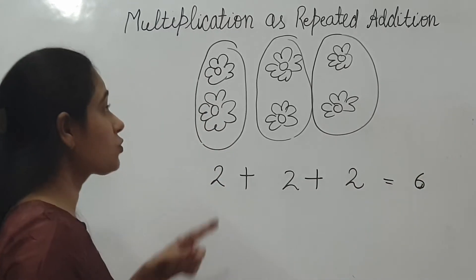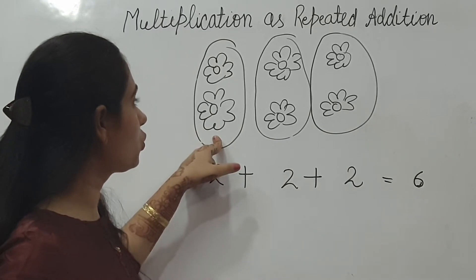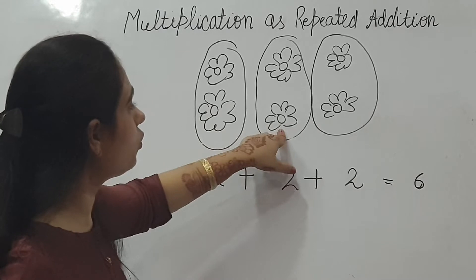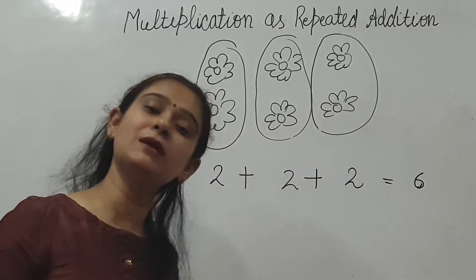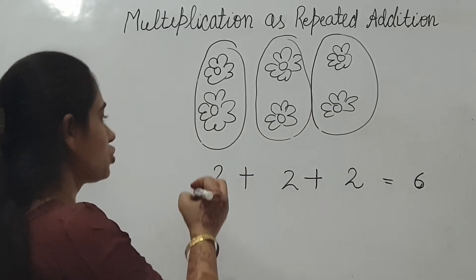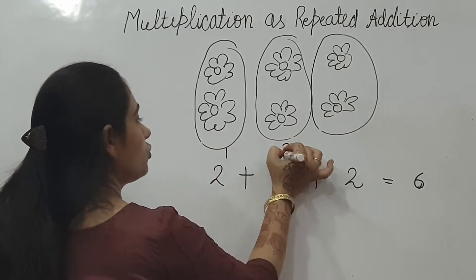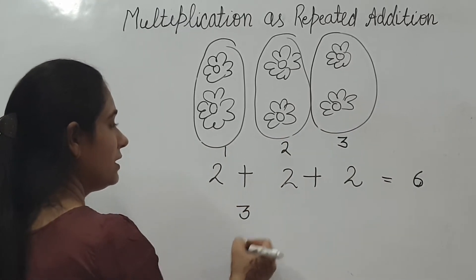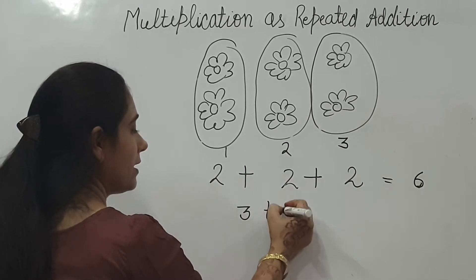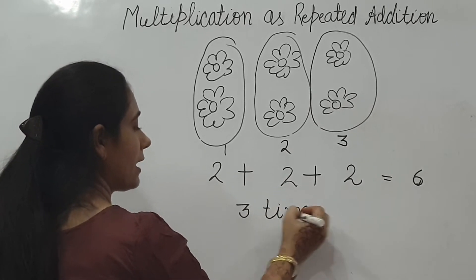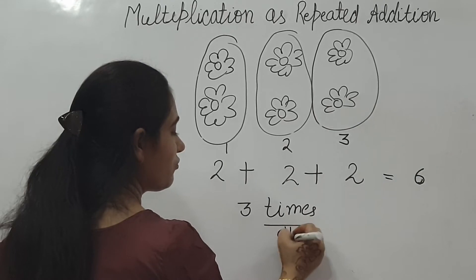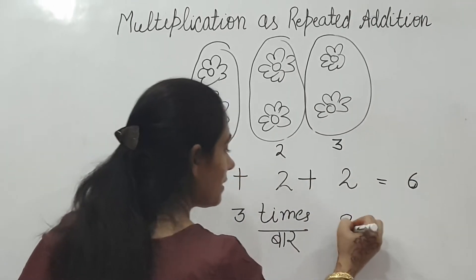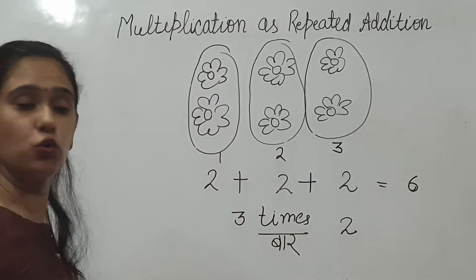Now how can we also write this? Two, two, two. Now how will we write this in multiplication? Count the groups. One, two, three. Right? You will write three times. Times means again and again. Three times. Three times what came? Two.